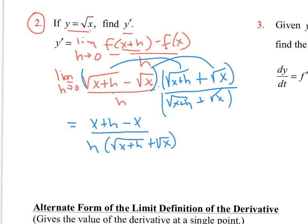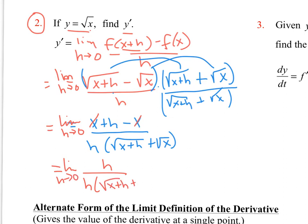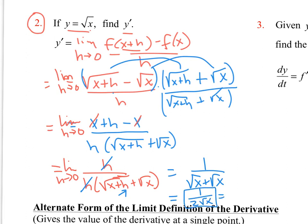Simplifying: x cancels with x, leaving h over h times (square root of x + h plus square root of x). The h's cancel — before that we had 0 over 0, so we had to resolve it. Now doing direct substitution by plugging in h = 0, we get 1 over (square root of x plus square root of x), which simplifies to 1 over 2 times the square root of x. That is y prime.